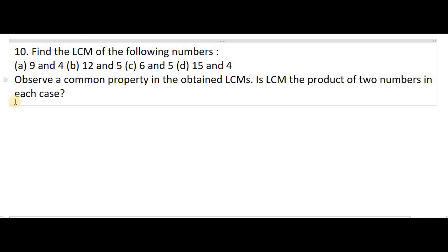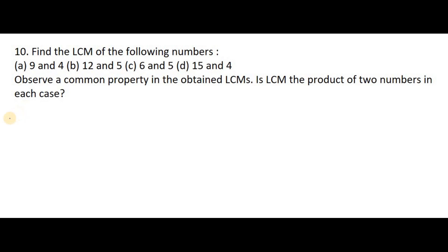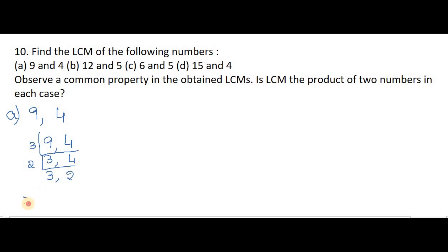Now without delay we'll start our class. The question is: find the LCM of the following numbers. Nine and four. Nine and four will not come in one table, so we use the three table: three threes are nine, and four comes as it is. Again two table: three twos are six, six threes are eighteen, eighteen twos are thirty-six. So the LCM of 9 and 4 is 36. Next: twelve and five.